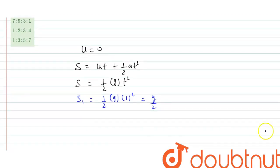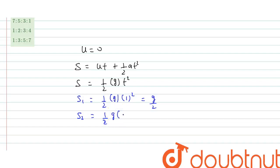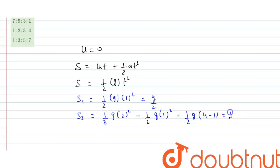Distance travelled by the body in the 2nd second equals total distance in 2 seconds minus total distance in 1 second: ½g × 2² − ½g × 1² = ½g(4 − 1) = ½g × 3.